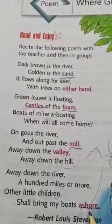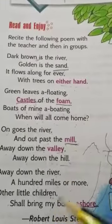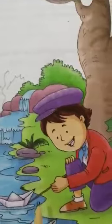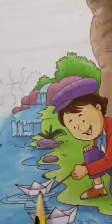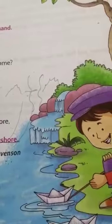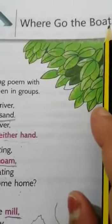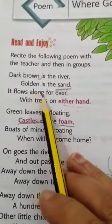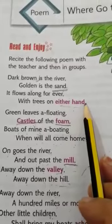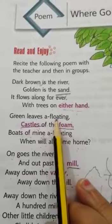So, do you understand what this poem is about? A child makes paper boats, plays at the river bank, and puts his boats into the river. He asks: where go the boats? In his imagination, he first describes the river — its water is brown in color, its sandy bank is golden, and the river flows with trees on both sides. Leaves fall from the trees and float in the river.